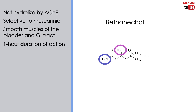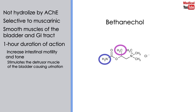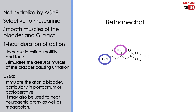It directly stimulates muscarinic receptors, causing increased intestinal motility and tone. It also stimulates the detrusor muscle of the bladder, causing urination. So it is used to stimulate the atonic bladder, particularly in postpartum or postoperative non-obstructive urinary retention. It may also be used to treat neurogenic atony as well as megacolon. It is available with the brand name Urecholine.